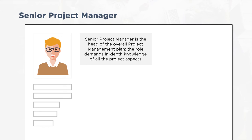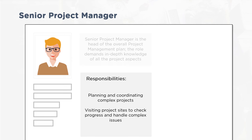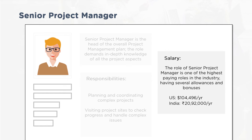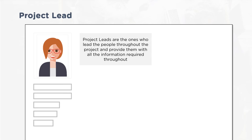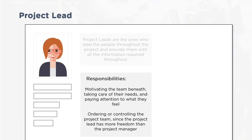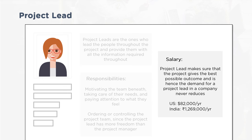The salary for a project manager is approximately $75,474 per year (USD), or around ₹1,500,000 INR. The senior project manager is head of the overall project management plan, requiring in-depth knowledge of all project aspects. Responsibilities include planning and coordinating complex projects and visiting project sites. Salary is approximately $104,000 per year (USD), or around ₹2,092,000 INR — one of the highest-paying roles in the industry.